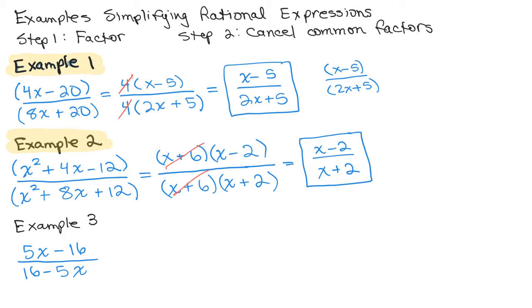All right, here's our third example. We've got 5X minus 16 over 16 minus 5X. Now, neither of those can be factored further. But what you want to notice is that those are opposites.